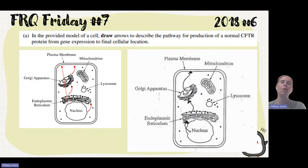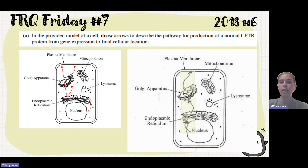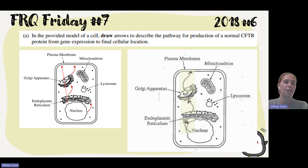Looking at the student's response: they drew nucleus to rough ER — check. They also went from rough ER to Golgi and then Golgi to plasma membrane. So the student got their one point there.